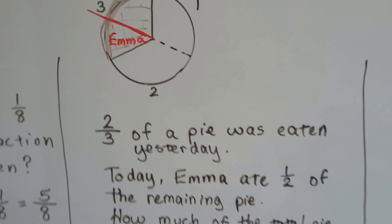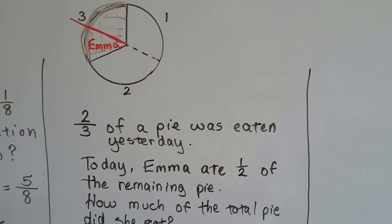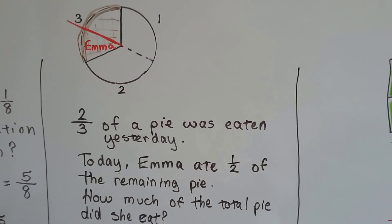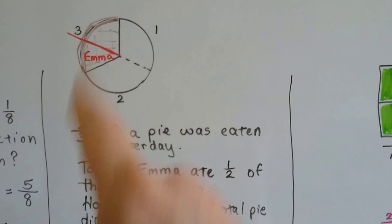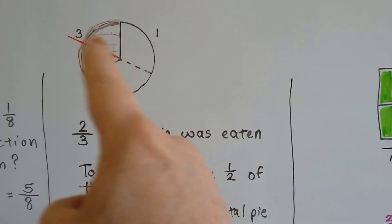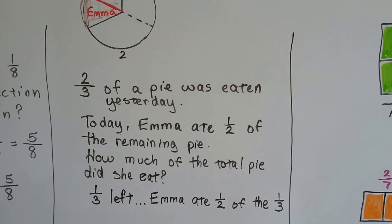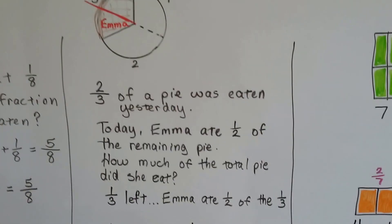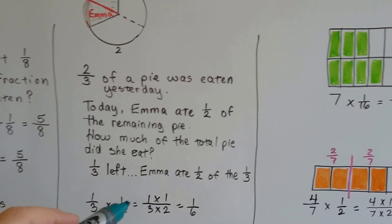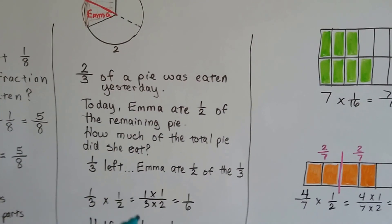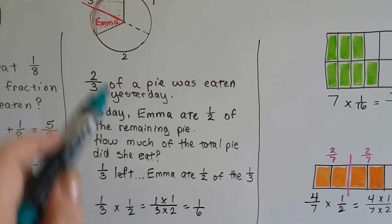2/3 of a pie was eaten yesterday, and today Emma ate half of the remaining pie. So, how much of the total pie did she eat? The pie was cut into 3 parts, into thirds. 1, 2, 3. And the last third, she only ate half of it. There was 1/3 left, and she ate half of the third. So, you do 1/3 times 1/2 to cut it in half. 1 times 1 over 3 times 2. She ate 1/6.